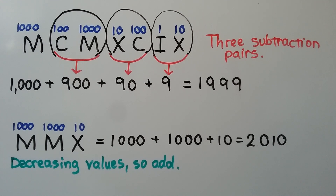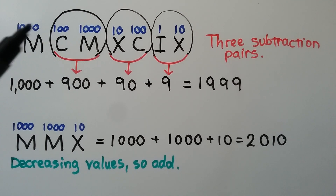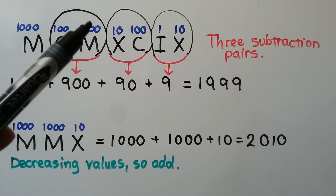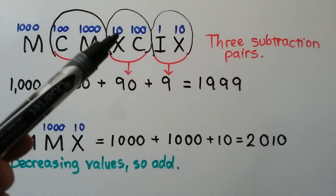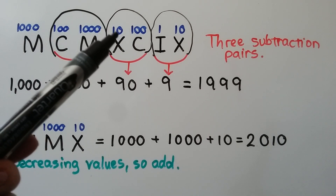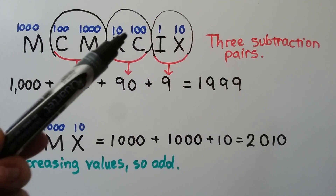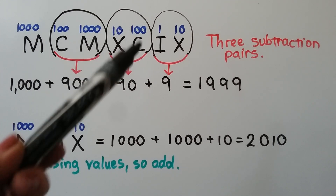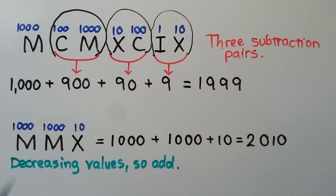The subtraction pairs really stand out when we notice the value went down, but then went back up. When that happens — the lower value followed by a higher value — those two form a subtraction pair.